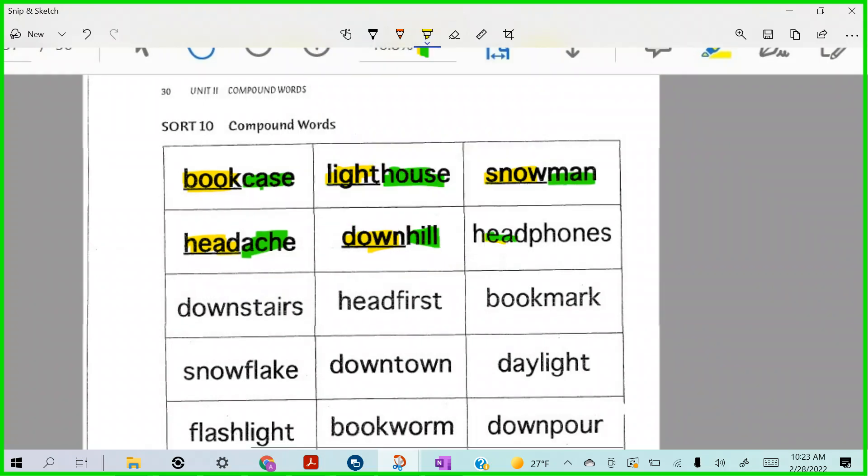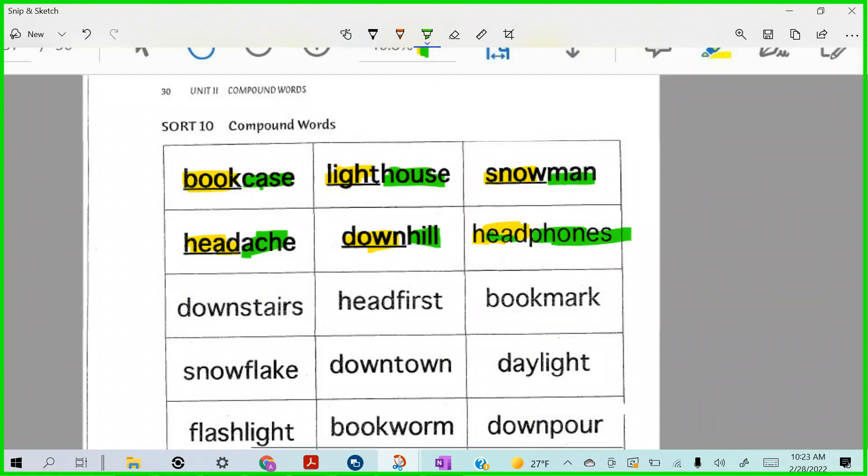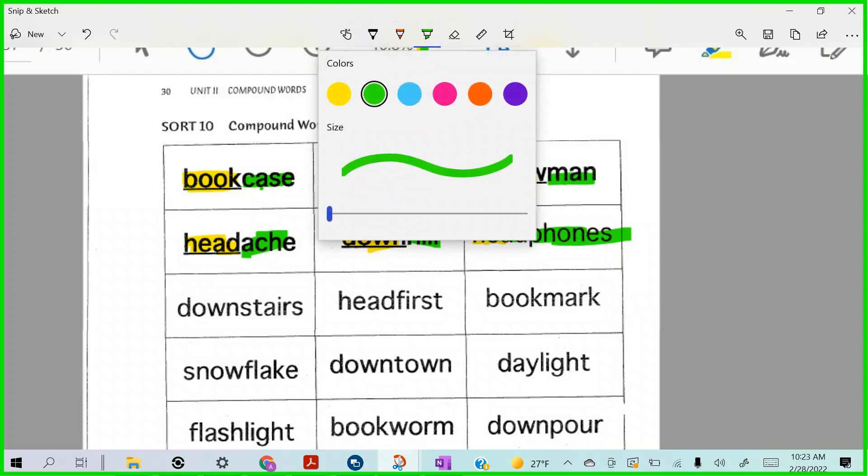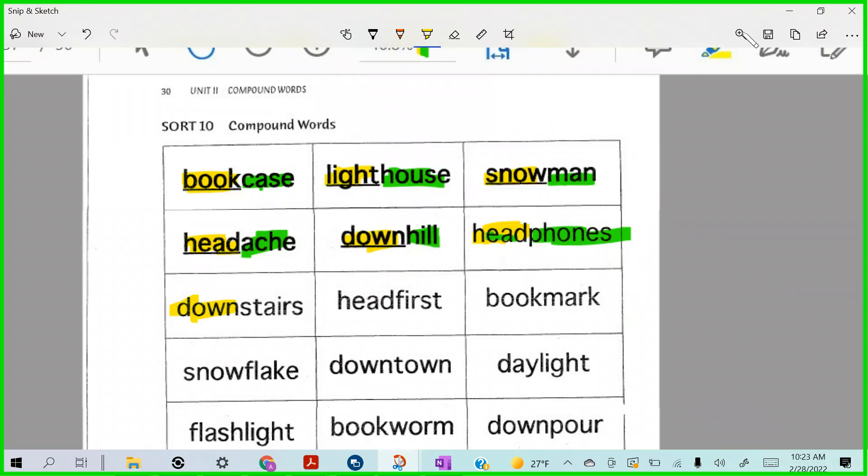Would then be in green? Phones would be in green. All right, let's try one more. Downstairs. Jarvis, yep, down and then stairs. Headfirst. Give me another yellow grouper. Yes, Cohen. Head, okay.